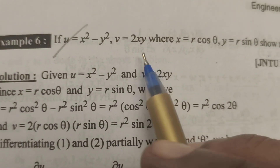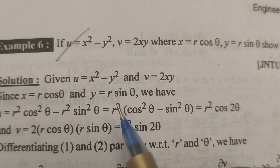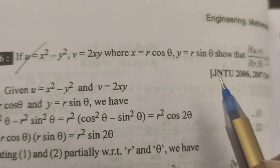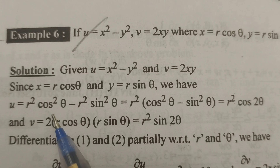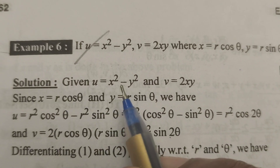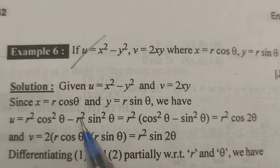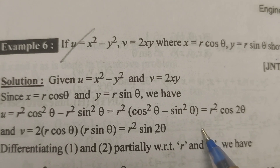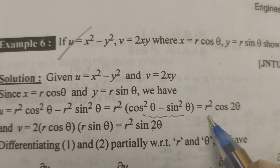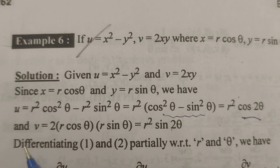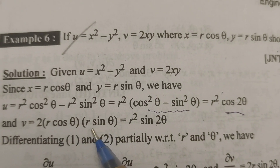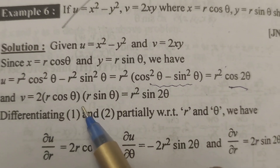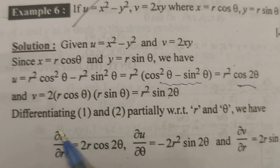First, write the given u and v, with x = r cosθ and y = r sinθ. Substituting, u equals r² cos²θ minus r² sin²θ, which gives r² cos2θ using the identity cos²θ - sin²θ = cos2θ. And v equals 2·r cosθ·r sinθ, that is r² sin2θ, since 2 sinθ cosθ equals sin2θ.